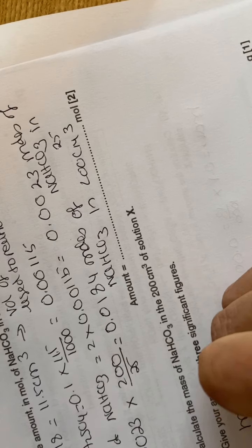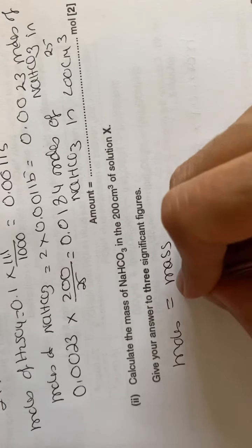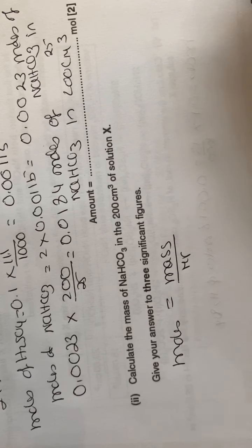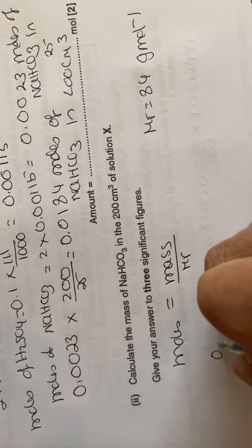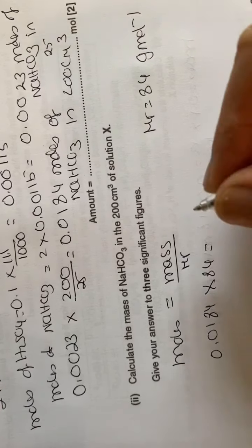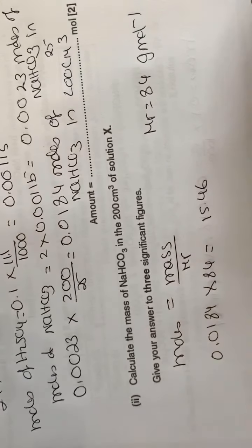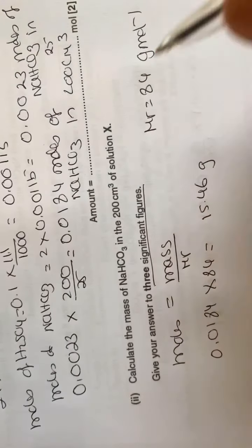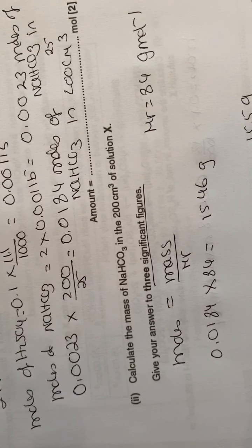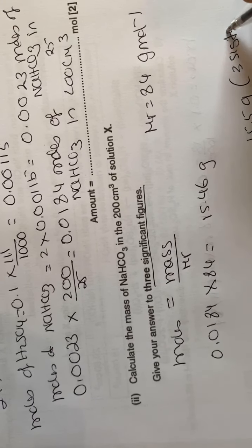Finally, calculate the mass. Moles of NaHCO₃ = 0.00184, and its Mr is 84. So mass = 0.00184 × 84 = 15.456 g. Rounded to 3 significant figures, the answer is 15.5 grams of sodium hydrogen carbonate in the 200 cm³ solution.